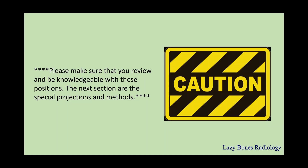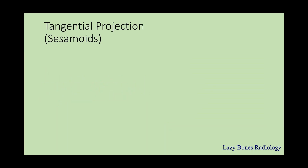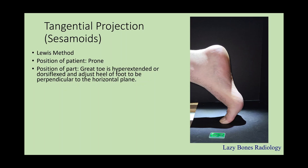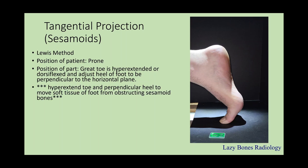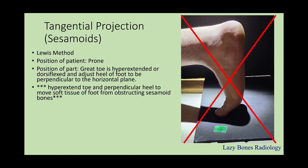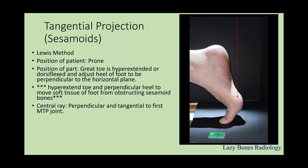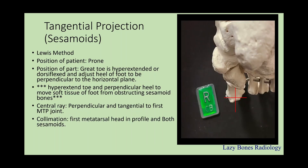The next section is special projections and methods. The tangential projections for the sesamoids — the Lewis method. Position of the patient: prone. Position of the part: the great toe is hyperextended or dorsiflexed and adjust the heel of the foot in order to be perpendicular with the horizontal plane. Make sure to hyperextend the toe and keep the heel perpendicular to move the soft tissue of the foot from obstructing the sesamoid bone of the first digit. Incorrect positioning will obstruct the sesamoid bones. Centering is perpendicular and tangential to the first metatarsal phalangeal joint. Make sure to collimate the entire metatarsal head in profile and both of the sesamoid bones. SID is 40 inches, and remember to label correctly.